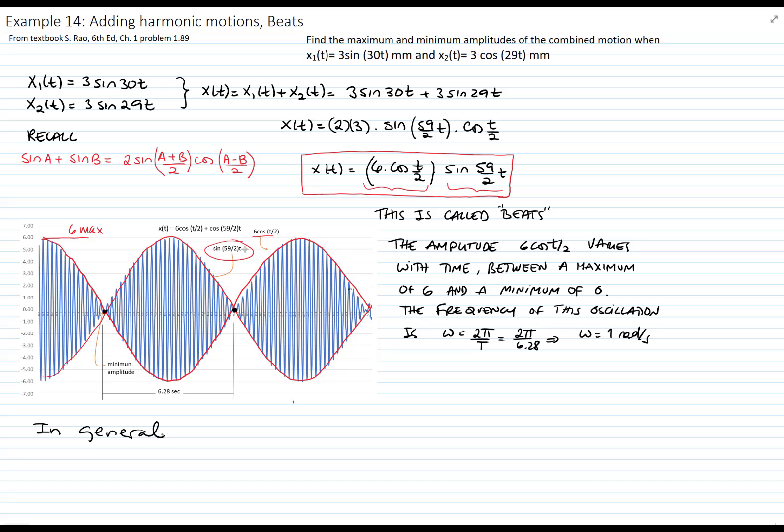In general, when we have two functions with similar frequencies, like for example, x₁(t) = x sin(ωt) and x₂ = x sin((ω+Δ)t). And delta is very small.